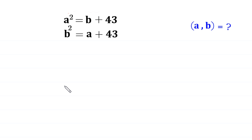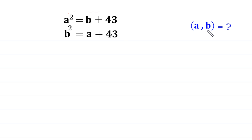Hello everyone, welcome. We will solve this system of equations: a squared is equal to b plus 43, and b squared is equal to a plus 43. Our job is to find all possible values of a and b. Let's call the first equation 1 and the second equation 2.